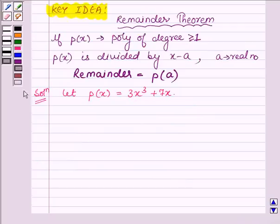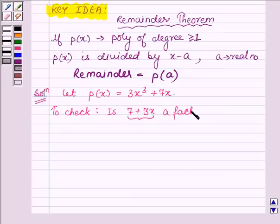And here we have to check whether 7 plus 3x, which is a linear polynomial, is a factor of p(x). So first we will find the zero of 7 plus 3x, and the zero of 7 plus 3x is